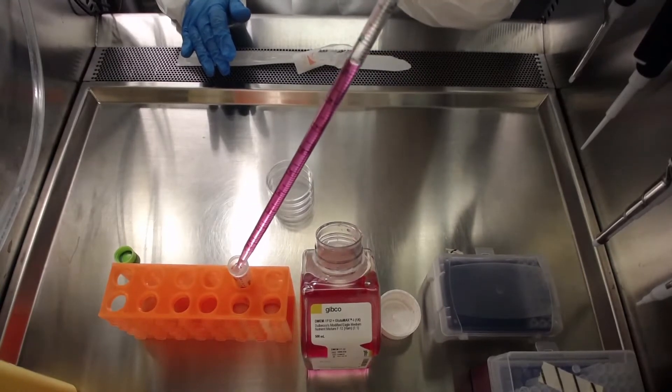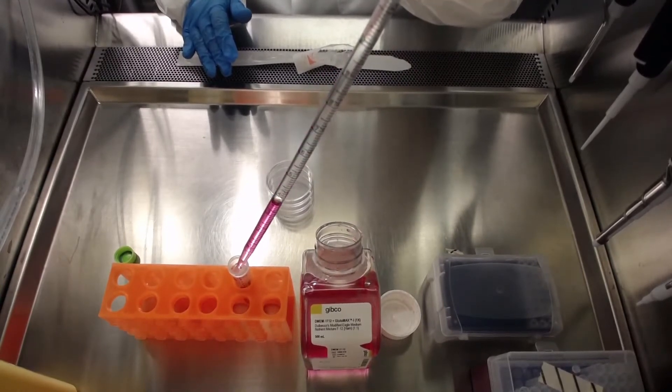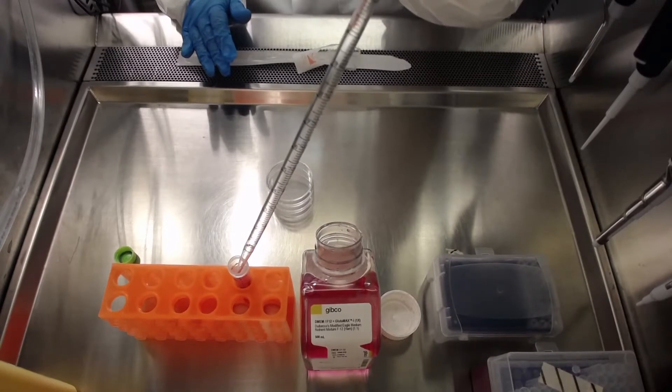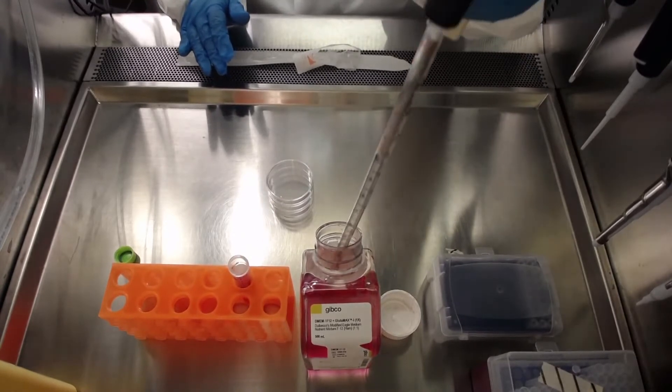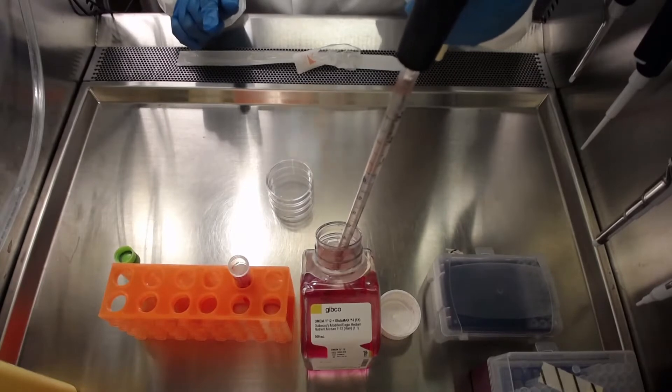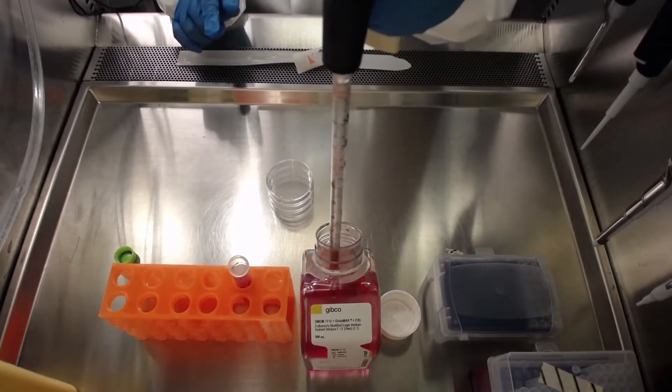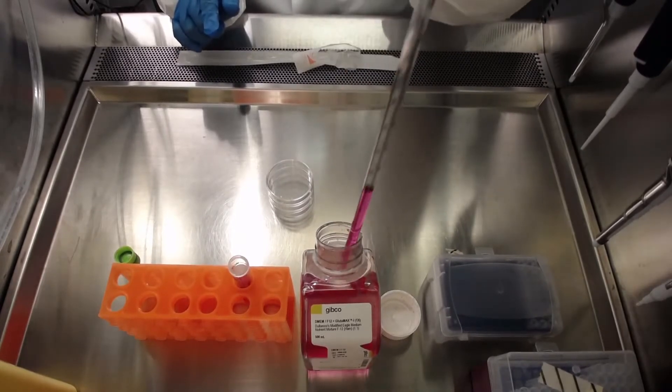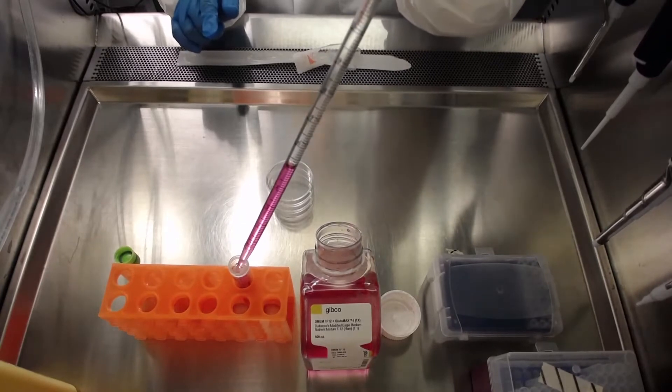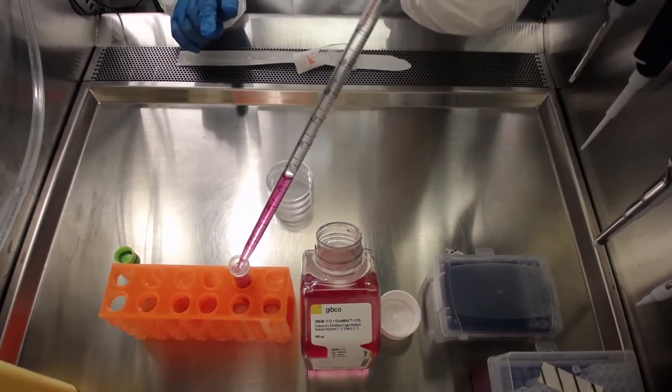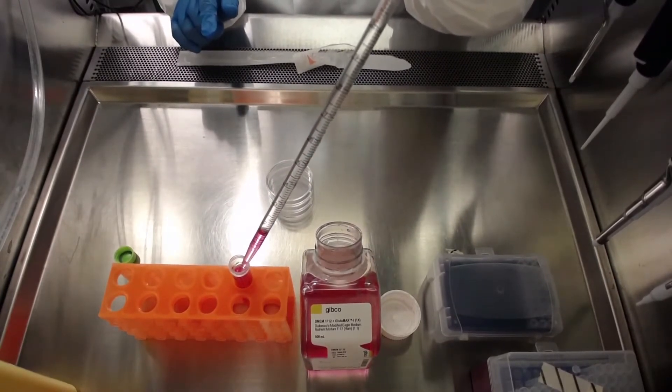If using more than one aliquot, you can pipette the media in an adequate number of tubes and place them on ice to make sure the media stays cold. It is important to dissolve matrigel in cold media to avoid polymerization inside the tube.